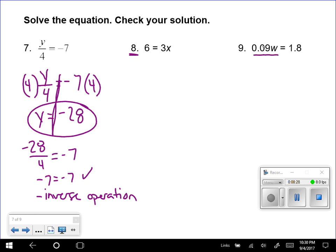So there's multiplication happening here. To undo multiplication, I'm going to use division. So I'm going to do 0.9. If I do it to one side, I have to do it to the other. 0.09.